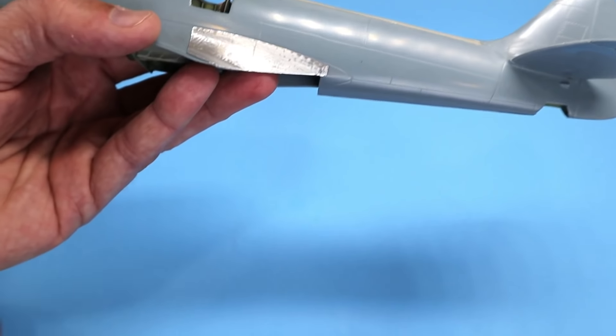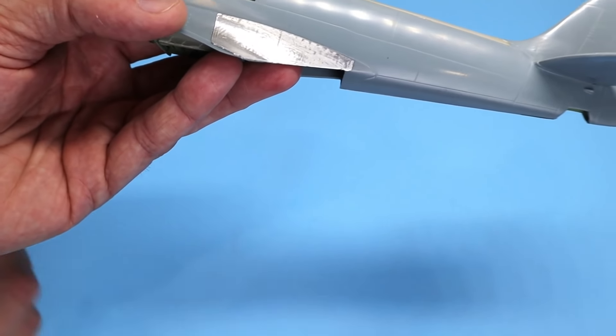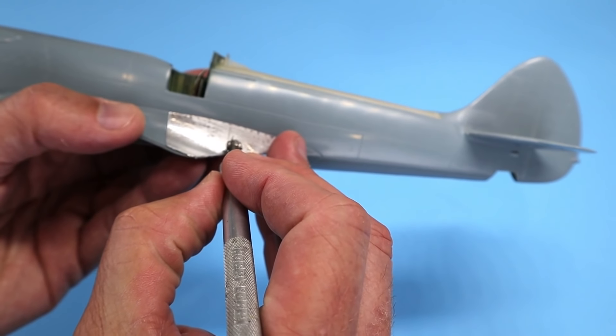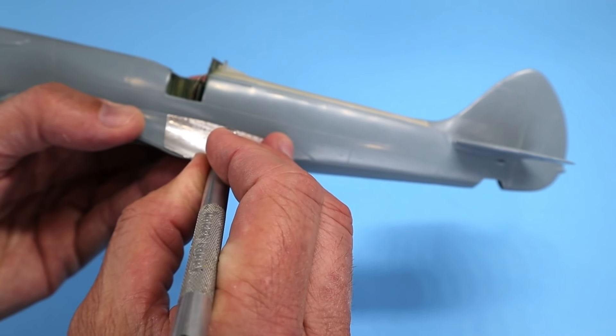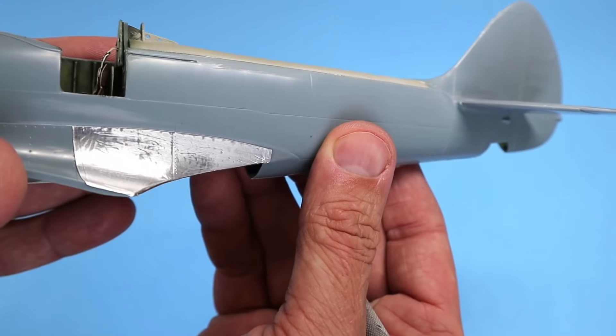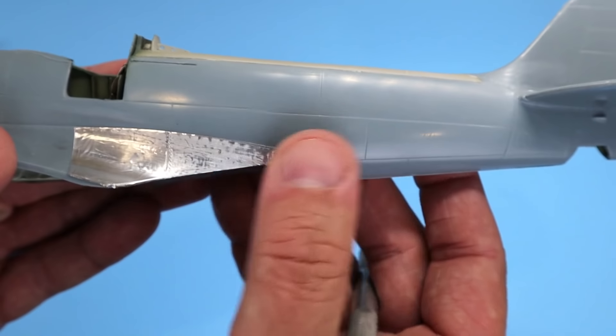You can also use any riveting tool to create rivets in the aluminum skin. So if I can zoom in there so you can see that—kind of hard to see, but maybe you can see that right there.